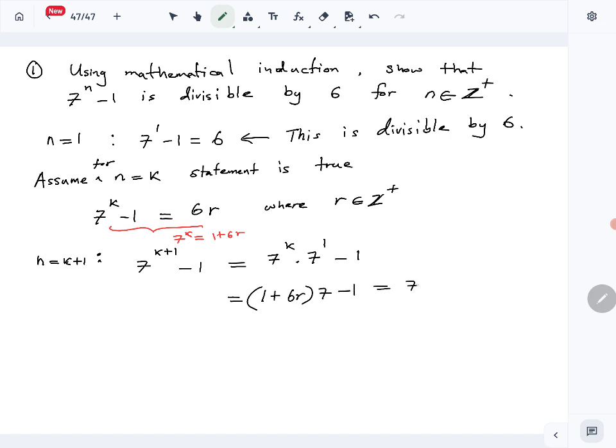Plus 7 times 6r minus 1. Again, simplify. You get 6 plus 7 times 6r.